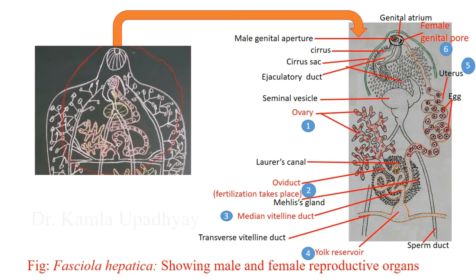The female reproductive organs in detail: a highly branched ovary connects to a common duct called the oviduct, where fertilization takes place. The oviduct gives rise to a small muscular canal called Laurer's canal, which is a temporary opening for copulation during breeding, opening to the outside through a median dorsal pore and acting like a vagina during copulation.